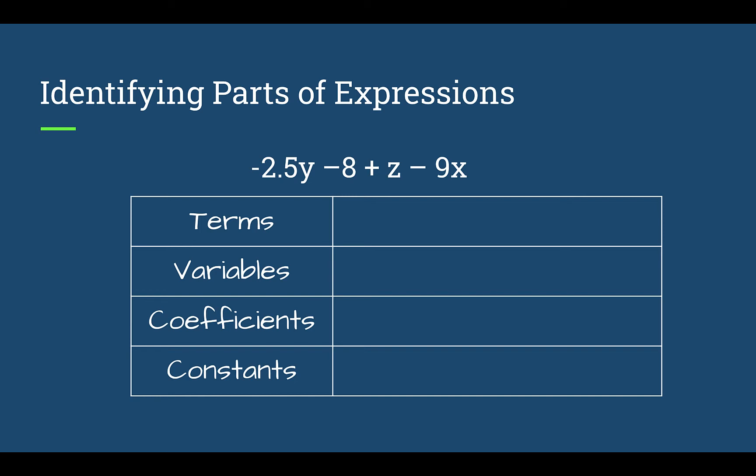Now that you've had a chance, let's look at what fits into each of the four categories. So your terms were what's separated by plus or minus. So I have negative 2.5y, negative 8, positive z, again we don't need to put the plus, and negative 9x.